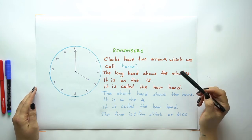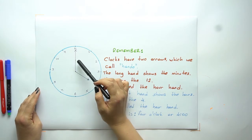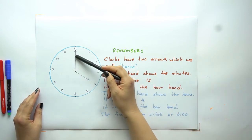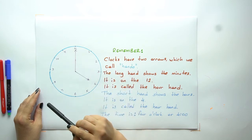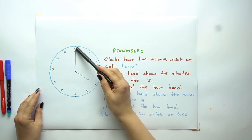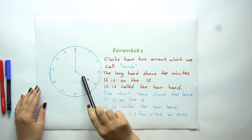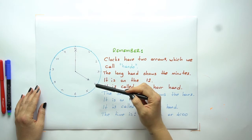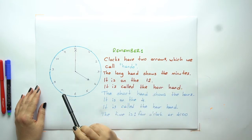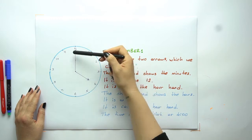Now, each clock has two arrows. Look at this example. As you can see in the picture, this clock has two arrows, which we call hands. The long hand shows the minutes — it always shows the minutes. Here in this clock it's on the 12. And the short hand shows the hours. Here in this example it's on the 4. It's called the hour hand. So here in this picture, what time is it? The time is 4 o'clock.